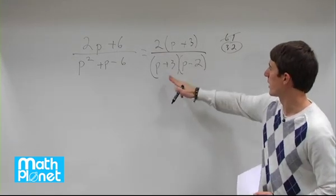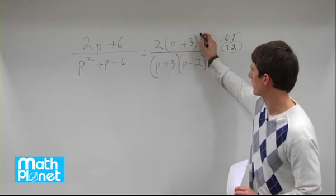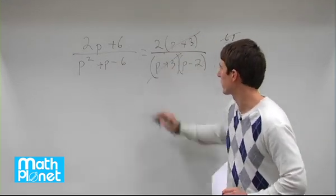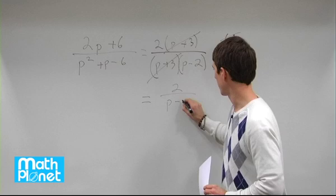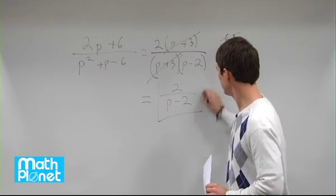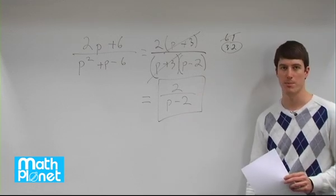As predicted, we see two factors that are the same. We can cancel (p plus 3) from the numerator and denominator. Therefore we immediately get 2 divided by (p minus 2). So our final simplified answer is 2 over (p minus 2).